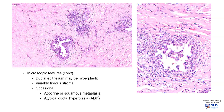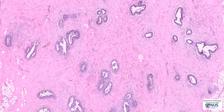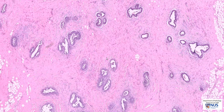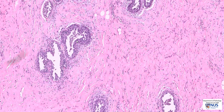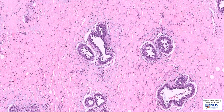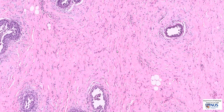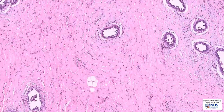Occasionally there can be apocrine or squamous metaplasia as well, and even atypical ductal hyperplasia, which may give rise to increased risk of developing breast carcinoma. In summary, this is an example of gynecomastia where we have increased numbers of ducts not accompanied by lobules, showing variable degrees of ductal or epithelial hyperplasia, and a collagenous stroma with increased numbers of spindled stromal cells in some areas.